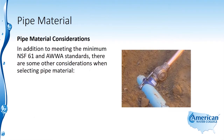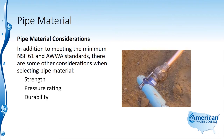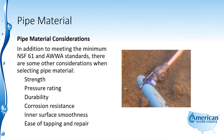In addition to meeting the minimum NSF-61 and AWWA standards, there are some other considerations when selecting pipe material. These include the strength of the pipe, the pressure rating of the pipe, the durability of the pipe, the corrosion resistance of the pipe, the inner surface smoothness of the pipe, the ease of tapping and repairing the pipe, as well as water quality maintenance.